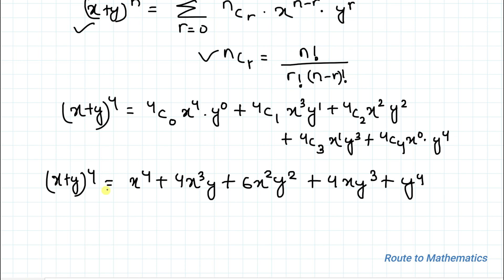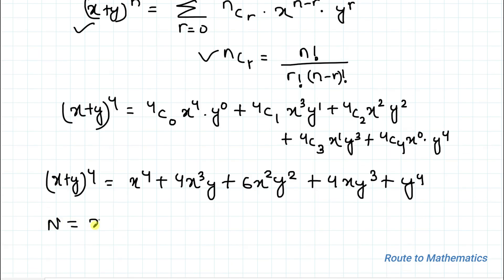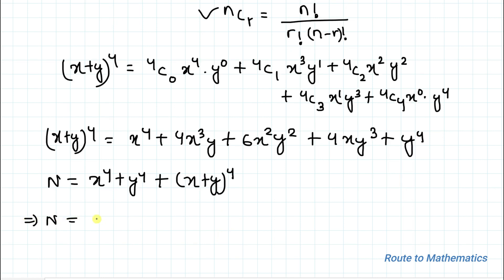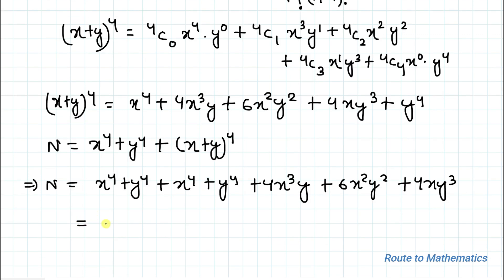Now let's call the total numerator N. We have N = x^4 + y^4 + (x + y)^4, which expands to: x^4 + y^4 + x^4 + y^4 + 4x³y + 6x²y² + 4xy³. This simplifies to 2x^4 + 2y^4 + 4x³y + 4xy³ + 6x²y².